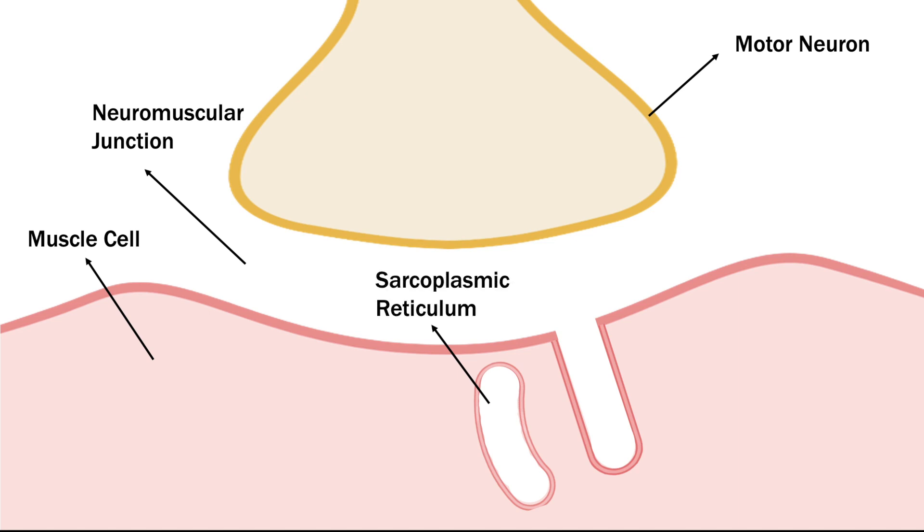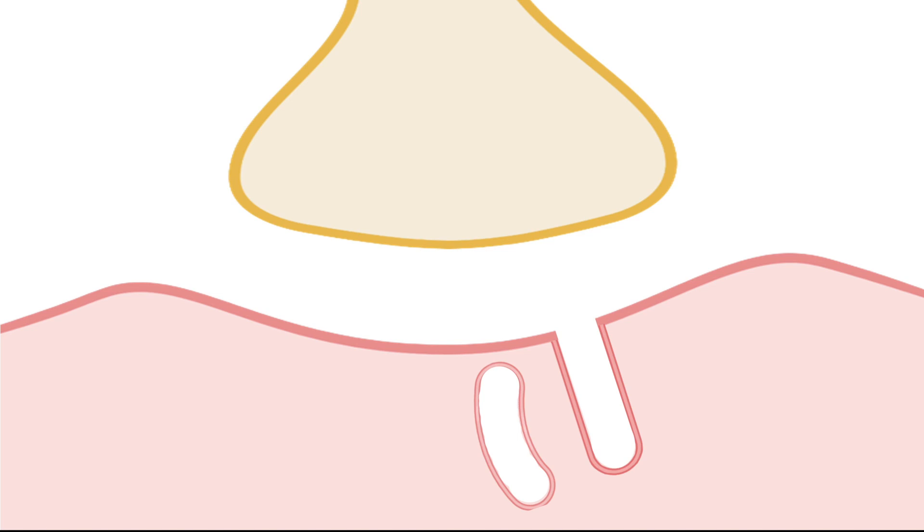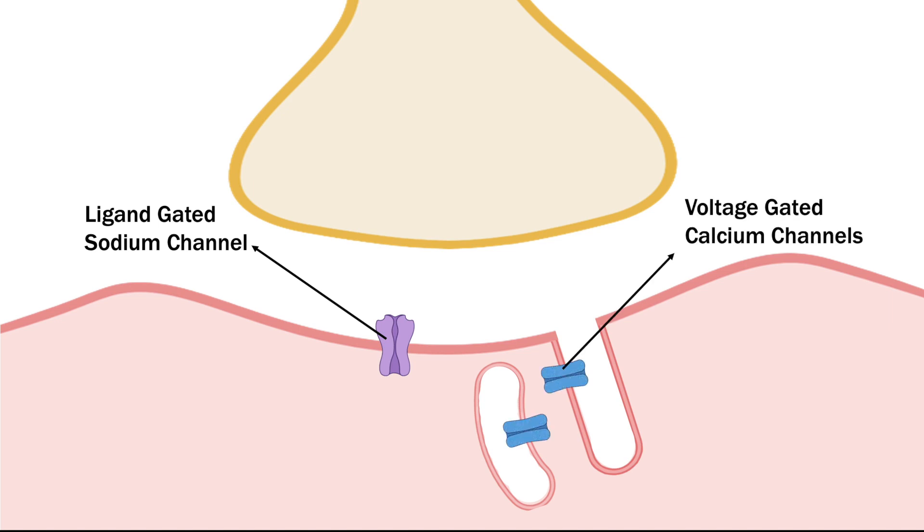Present on the muscle cell is the T-tubule and the sarcoplasmic reticulum. There would also be a ligand-gated sodium channel, which in this example, the ligand being introduced is acetylcholine. And there would be voltage-gated calcium channels present within the T-tubule and the sarcoplasmic reticulum.